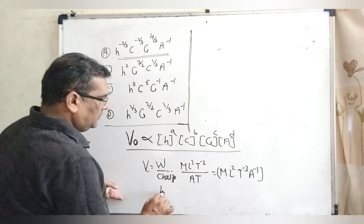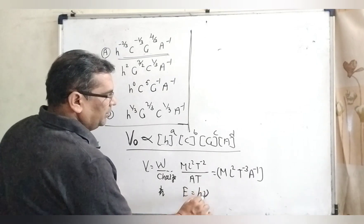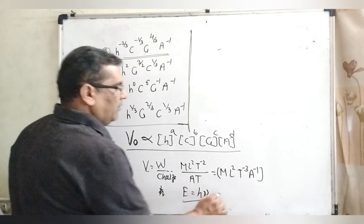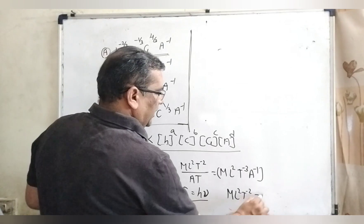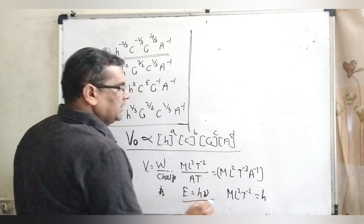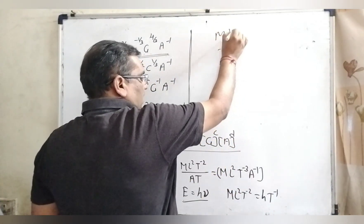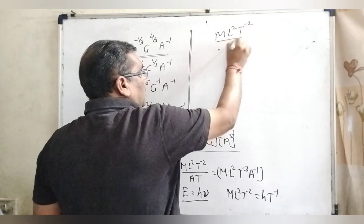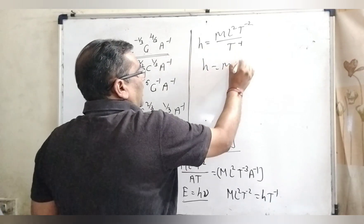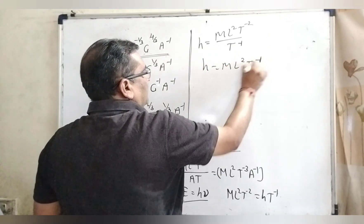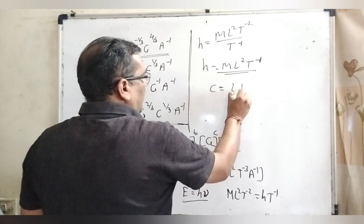Now, for Planck's constant h: we know E = hν, where ν means frequency and E is energy. The dimension of energy is ML²T⁻² and frequency is T⁻¹, so h = ML²T⁻²/T⁻¹ = ML²T⁻¹. This is the dimension of Planck's constant. For speed of light c, the dimension is LT⁻¹.